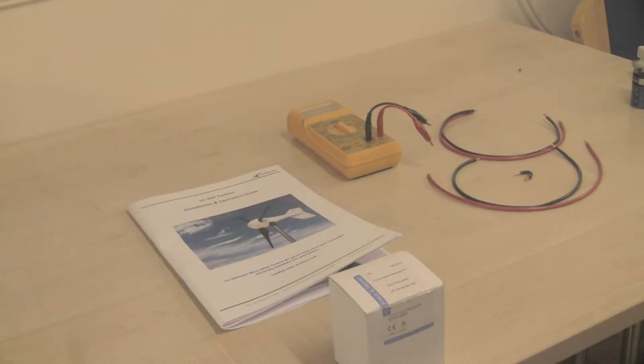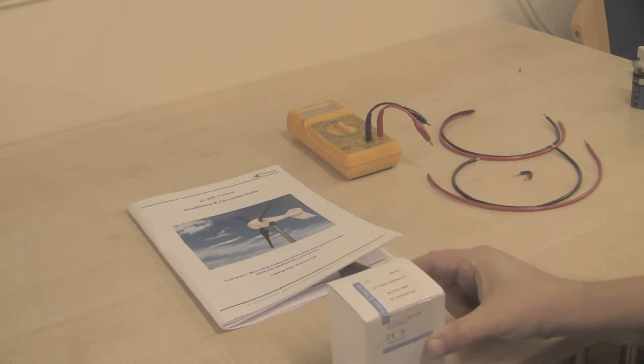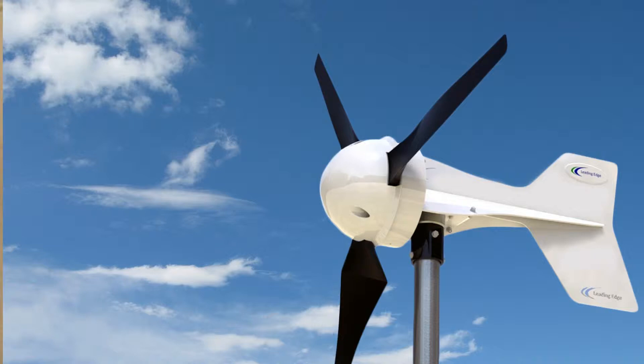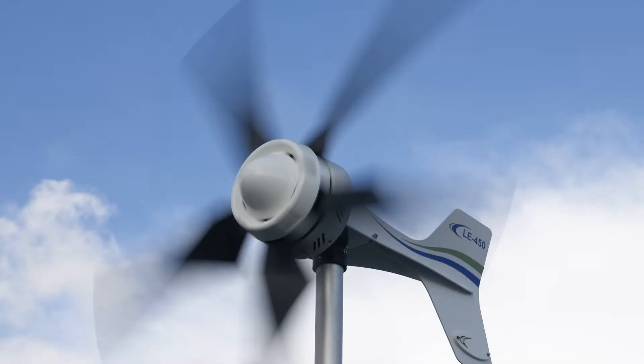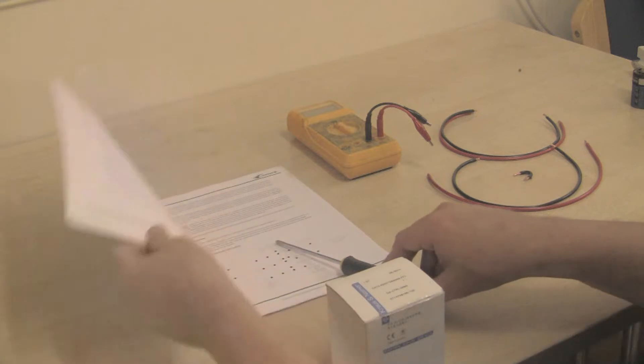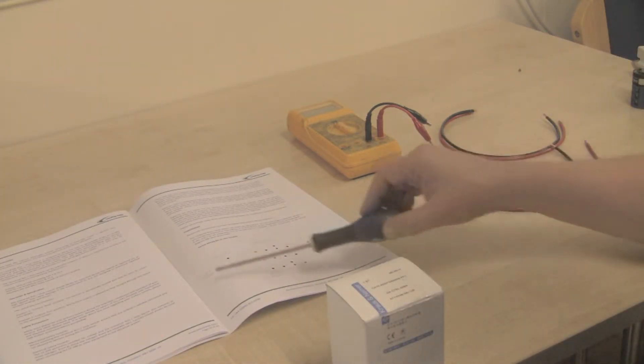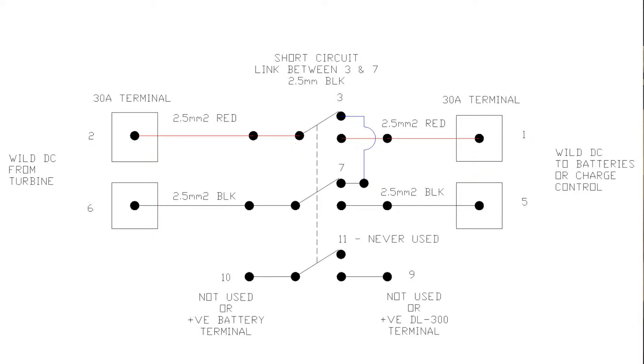All right, we just want to run through wiring up a run-stop switch, a Leading Edge Turbines run-stop switch, which you should receive with your wind turbine. We're going to go through the configuration for the LE300 and LE450 wind turbine. If we open the manual to page 33, we can see there's a small wiring diagram at the bottom here which we are going to follow today.